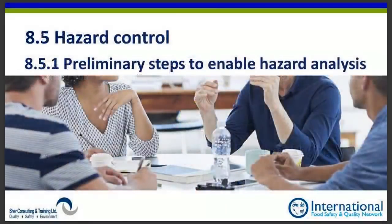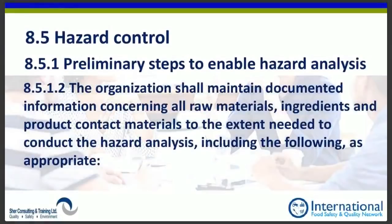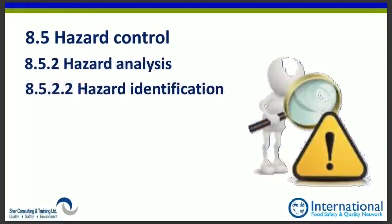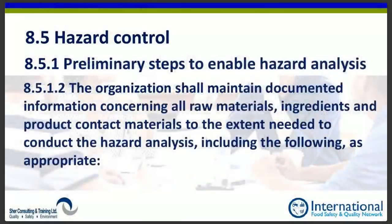Clause 8.5 — hazard control — is what used to be HACCP: the 12-step program of five preliminary steps and seven principles, all hidden in 8.5. Under 8.5.1 preliminary steps, organizations shall maintain documented information on all raw materials, ingredients, and product contact materials to the extent needed to conduct the hazard analysis. This requirement itself hasn't changed, but two new items have been added.